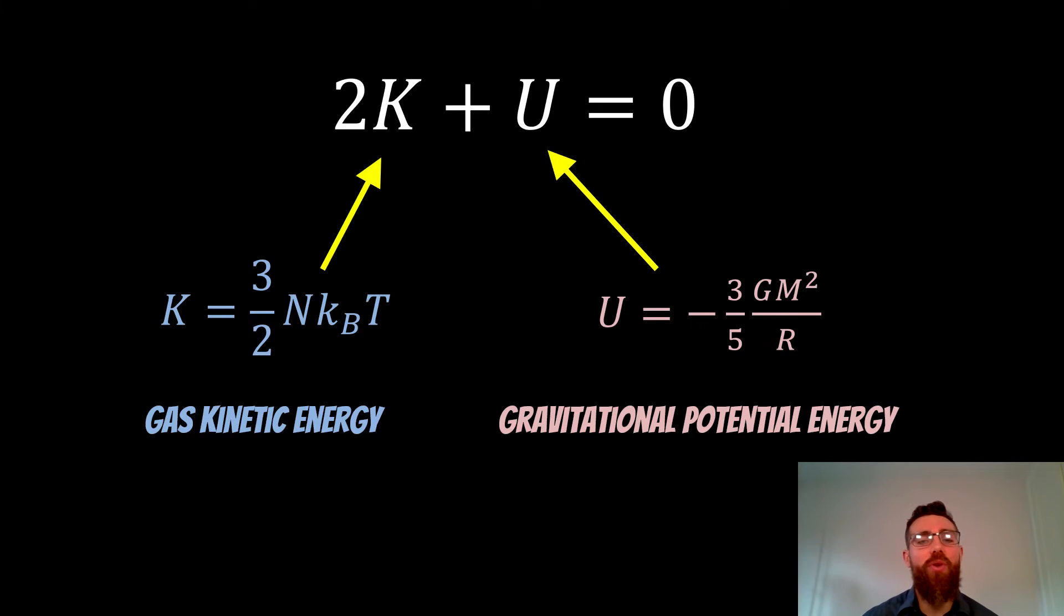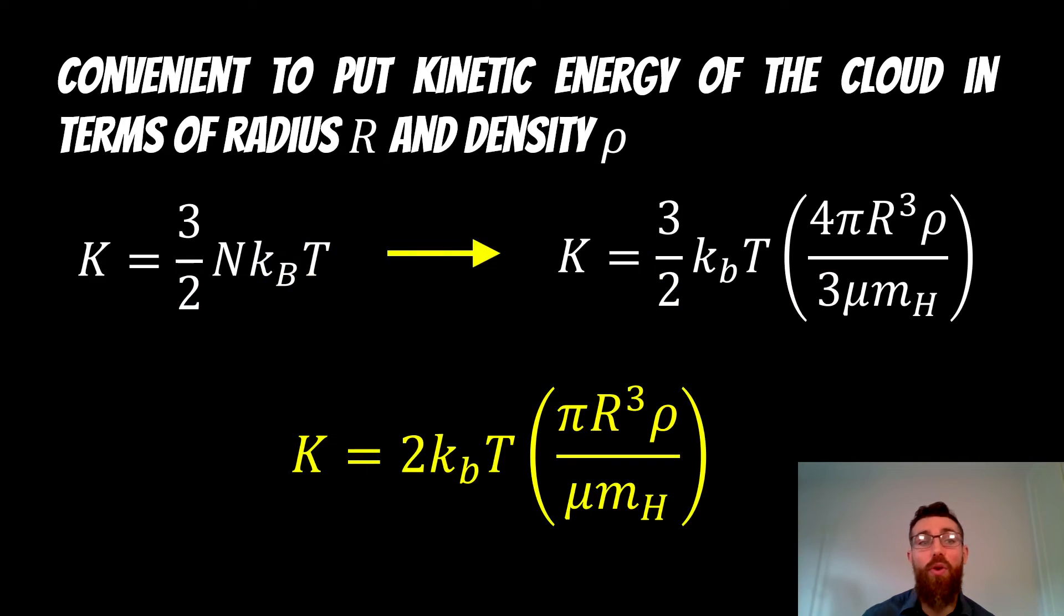It's not as straightforward as that to start with because our gas kinetic energy has an N in there, which is the number of particles in that cloud of gas. That doesn't make a great lot of sense when we're looking at a real cloud. We might want to turn that into something that's more useful, for example, we want to put that kinetic energy in terms of the radius and the density of that cloud.